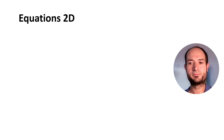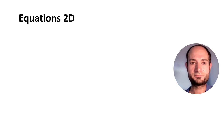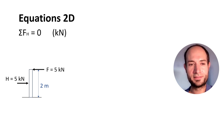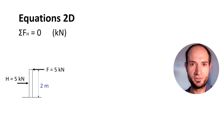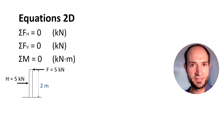So let's see how many equations we have for 2D and 3D structures. For 2D — and we will calculate most structures as 2D — we have: the sum of all horizontal loads equals zero, the sum of all vertical loads equals zero, and the sum of all moments about a point of reference equals zero. That gives us three equations of statics.